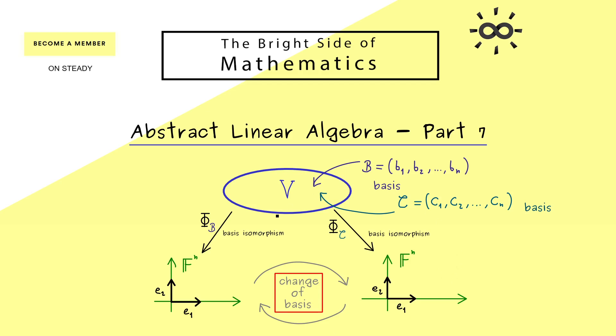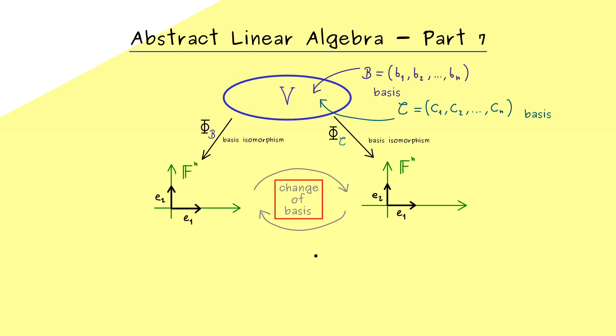Ok then I would say let's go into the definition there. First recall that our basis isomorphism is a bijective map. And moreover it's a linear map defined by using the basis vectors as said before. So bj is mapped to ej in F^n.